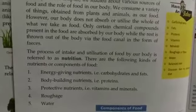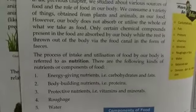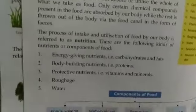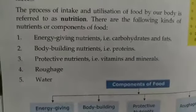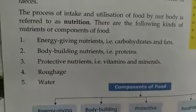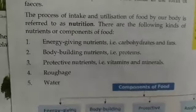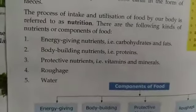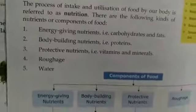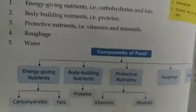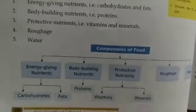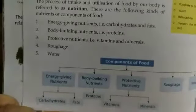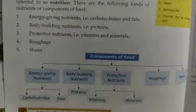There are following kinds of nutrients or components of food. Energy-giving nutrients: carbohydrates and fats. Body-building nutrients: protein. Protective nutrients: vitamins and minerals. Fourth is roughage. Fifth is water. These are the components of food — you can take a screenshot of it.